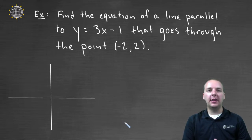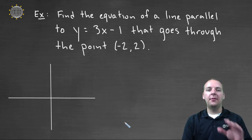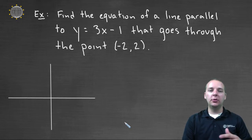Here's a very popular exercise dealing with parallel lines. What it says is, find the equation of a line parallel to y equals three x minus one that goes through the point negative two, two.